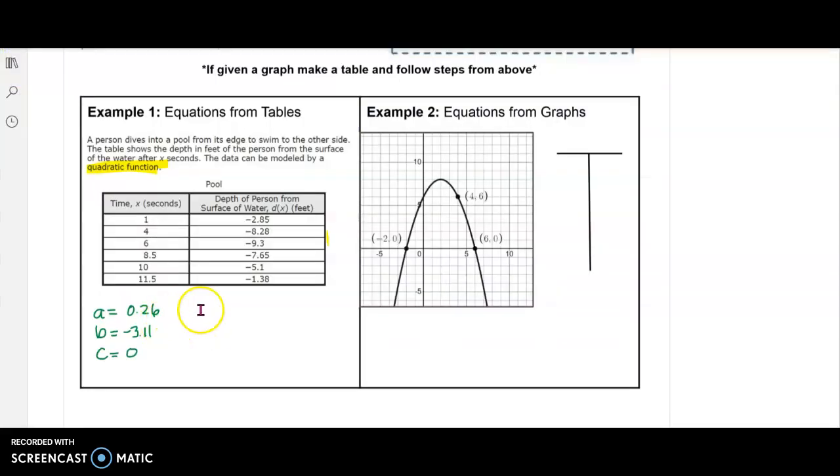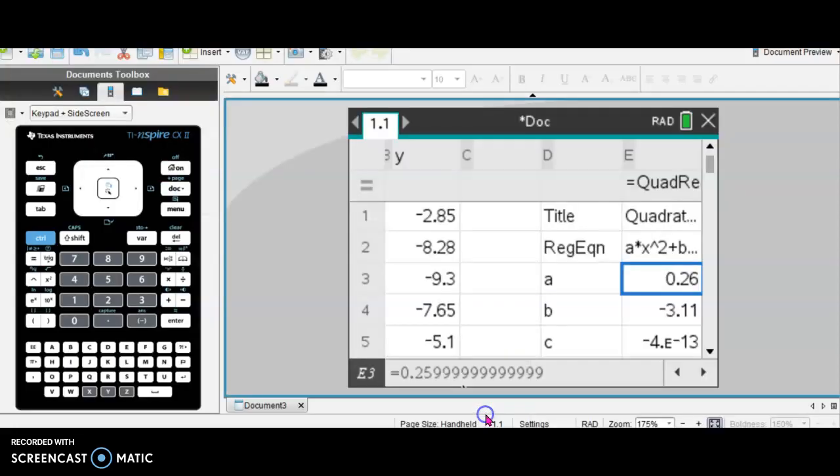All right. I've written down my A, B, and C. Please note that C is actually equal to 0 or very close to 0 if we're rounding. Because when you look here, 0.26 has been rounded.